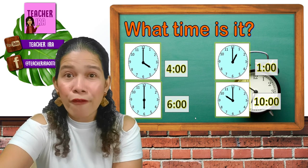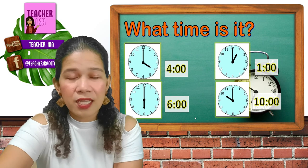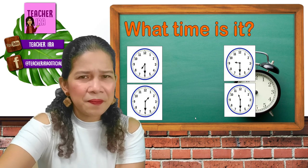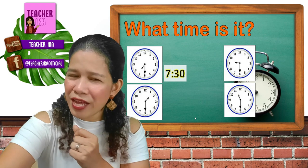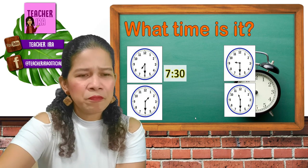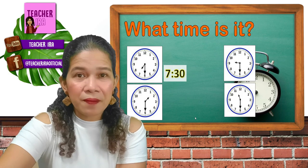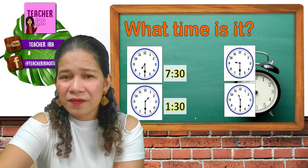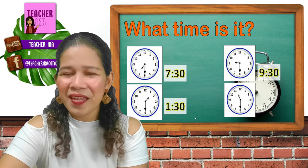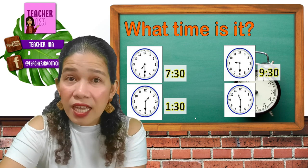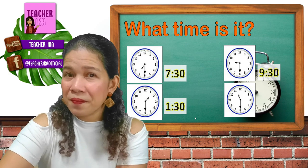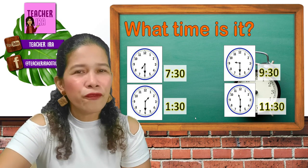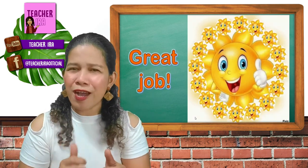Now let's do half-hour times. What time is that — is it 7:30 or 8:30? Correct, it's 7:30! How about the next clock — is it 1:30 or 2:30? Yes, it's 1:30. How about the next one — is it 8:30 or 9:30? It's 9:30! How about the next clock — is it 11:30 or 12:30? You're correct, it's 11:30!